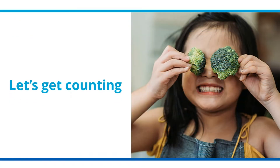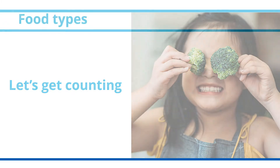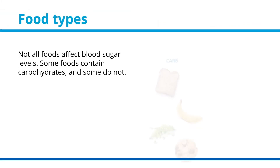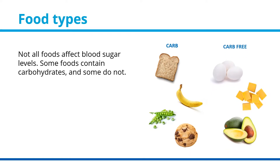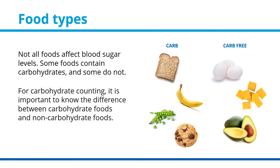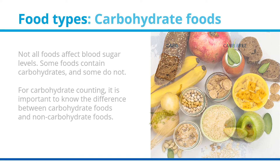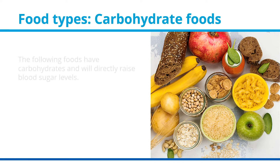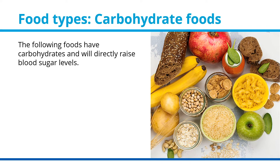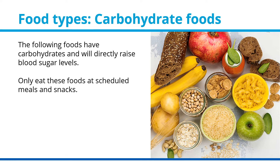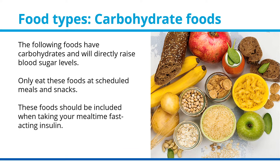Now, let's get counting. Not all foods affect blood sugar levels. Some foods contain carbohydrates and some do not. For carbohydrate counting, it is important to know the difference between carbohydrate foods and non-carbohydrate foods. The following foods have carbohydrates and will directly raise blood sugar levels. Only eat these foods at scheduled meals and snacks. These foods should be included when taking your mealtime fast-acting insulin.